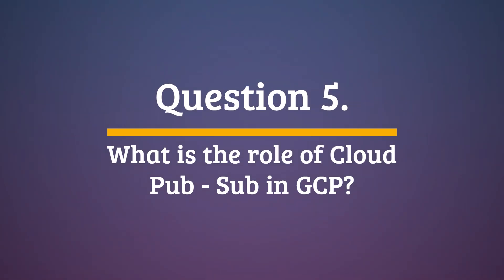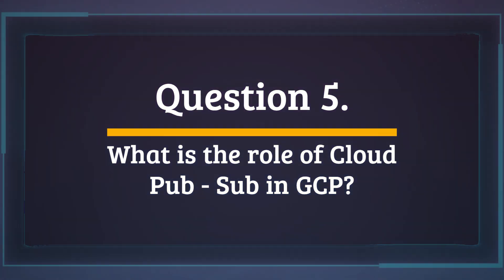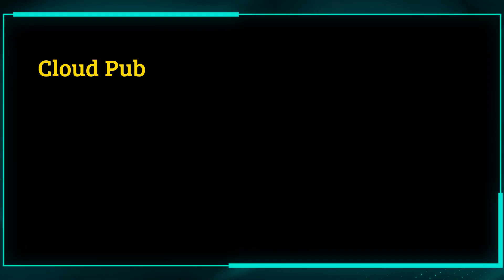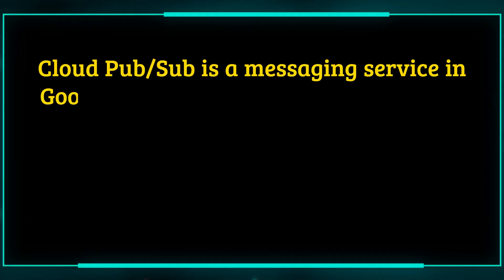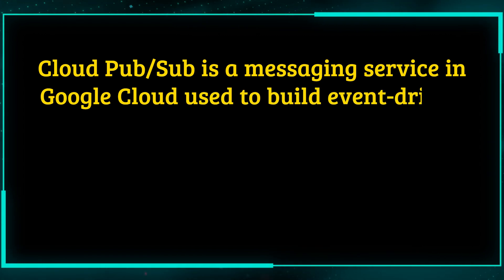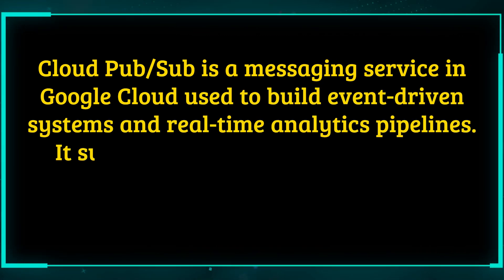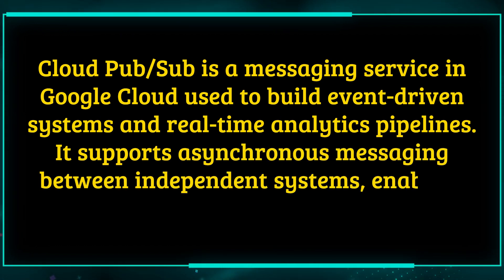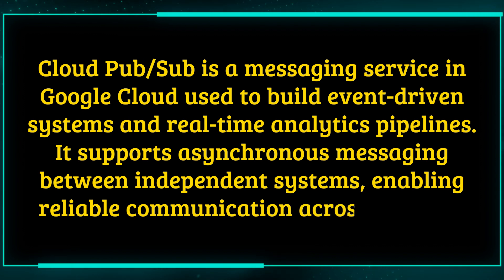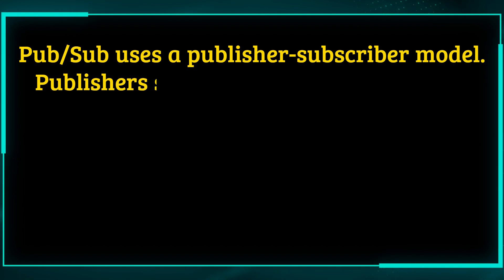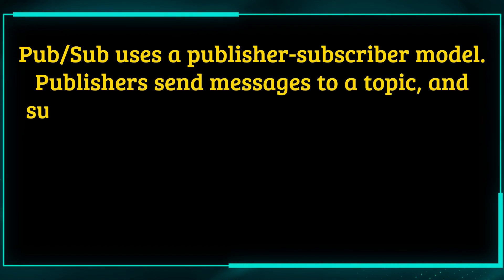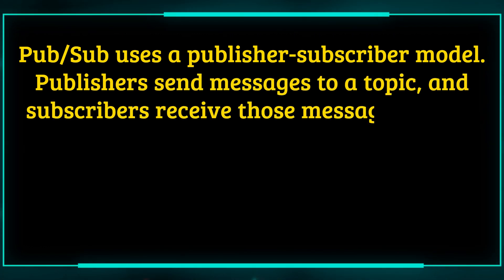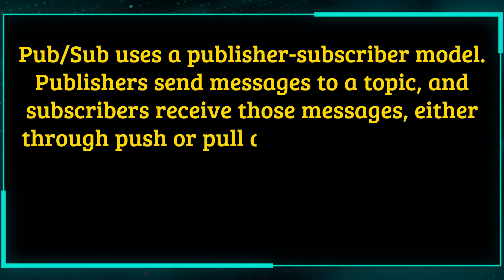Question 5. What is the role of Cloud Pub/Sub in GCP? Cloud Pub/Sub is a messaging service in Google Cloud used to build event-driven systems and real-time analytics pipelines. It supports asynchronous messaging between independent systems, enabling reliable communication across services. Pub/Sub uses a publisher-subscriber model. Publishers send messages to a topic, and subscribers receive those messages either through push or pull delivery mechanisms.